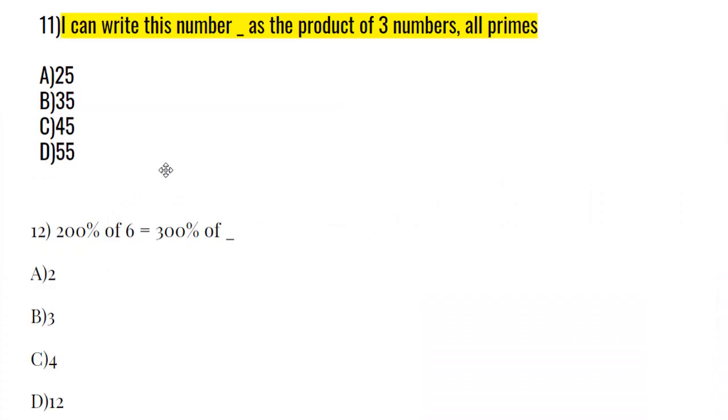Question 11. I can write this number blank as a product of three numbers, all primes. Because 11 and 12, by the way, were the questions that I gave at the end of the last video.